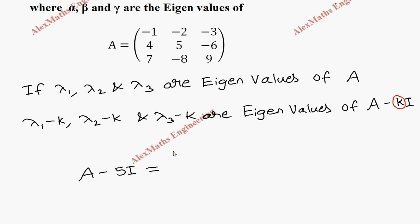For A, we have to copy the full matrix: minus 1, minus 2, minus 3, 4, 5, minus 6, 7, minus 8, and 9.